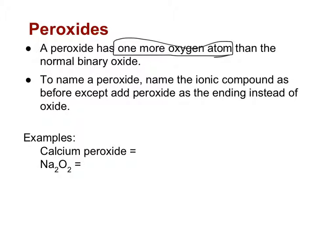So to name a peroxide, you're going to name the ionic compound as before, except adding peroxide as the ending instead of just oxide. So our first example, calcium peroxide, if we were to come up with a formula for just calcium oxide, it would be CaO. Now because we've got the 'per' here, it's telling us that we have one extra oxygen, meaning that the formula of calcium peroxide is CaO2.